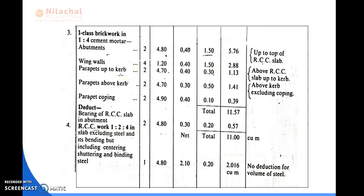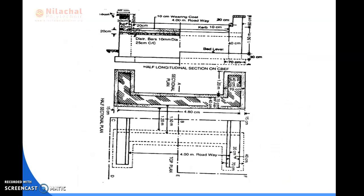Today's class, we discuss the parapet wall. First of all, we know about the parapet of two curves and parapet above curve. Parapet of two curves means — as we can see in the diagram — from the end of the slab to this part, this is our curve. From this point to this point, 20 cm or 10 cm thick distance, is the parapet of two curves. Then parapet above curve means from the curve to this point is the parapet above curve.